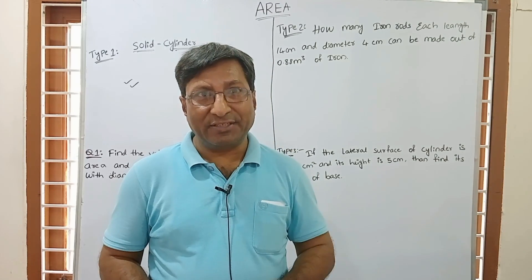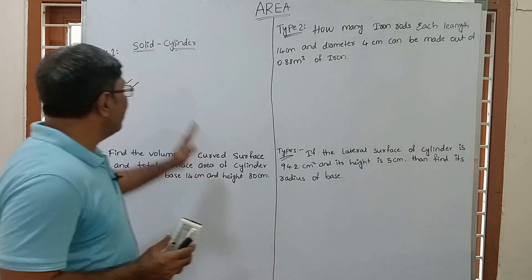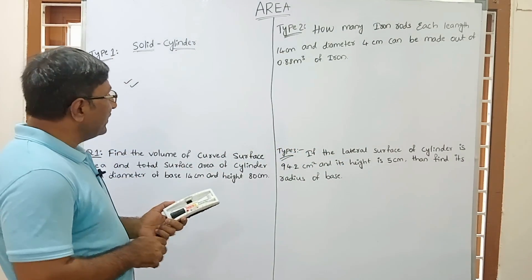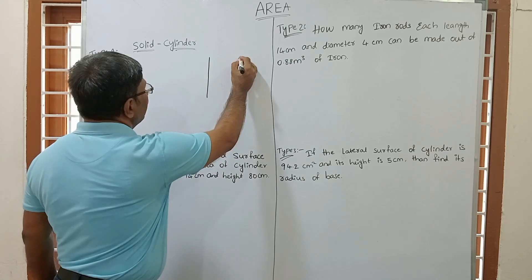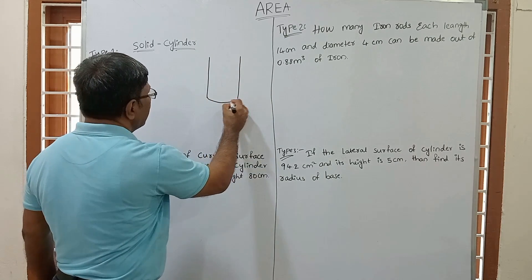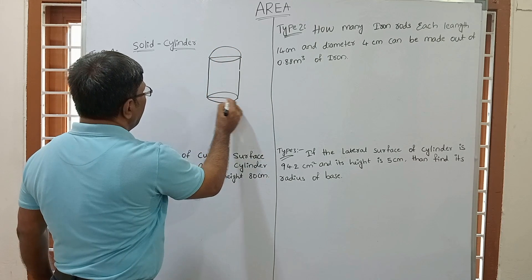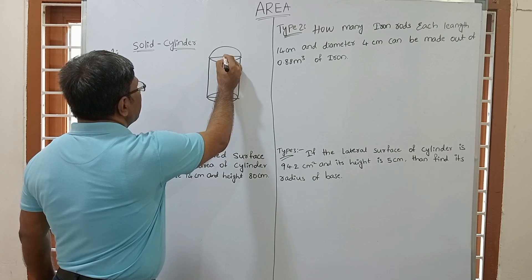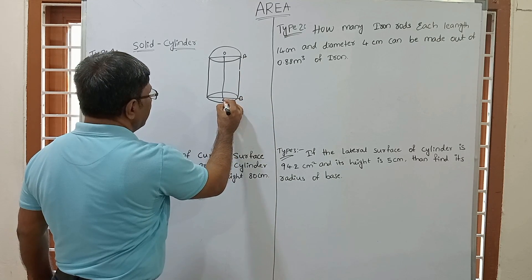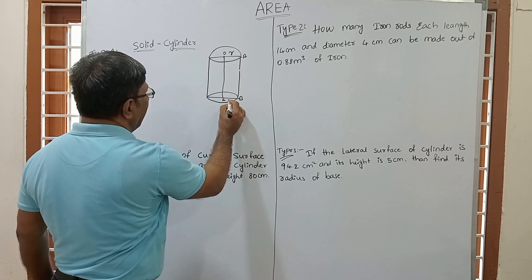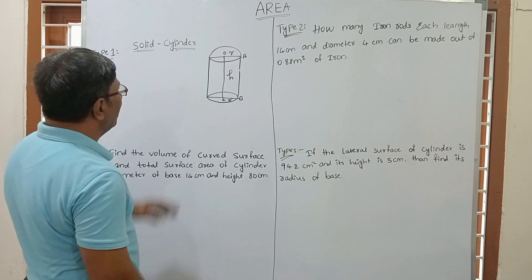Today we will study about the cylinder — basic and tricky types. This is a solid cylinder. We start with the basic points of the solid cylinder. This is point O, point A, point B, and point C. This is radius R and this is the height of the cylinder. So what is the important and basic formula of the cylinder?